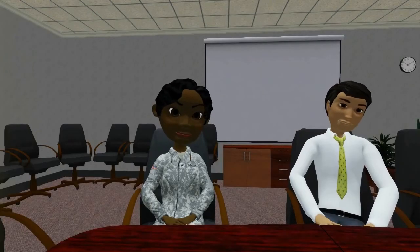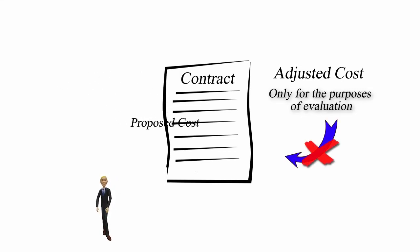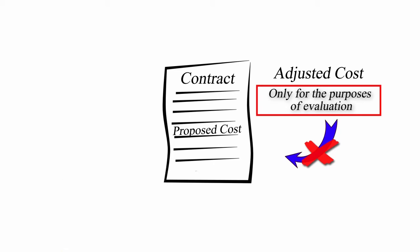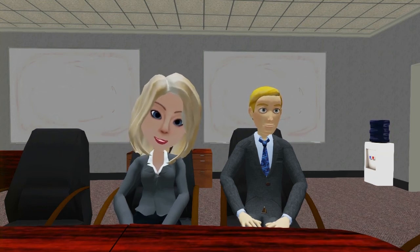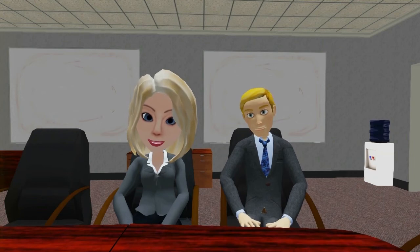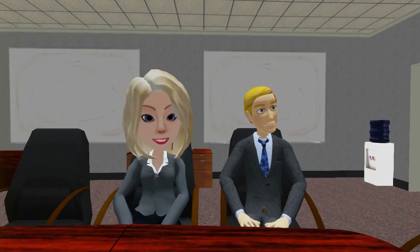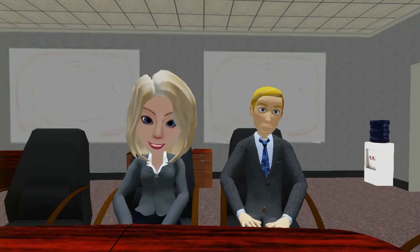Now let's suppose that the offeror whose proposal has been adjusted up is chosen as the winner. Do we award the contract at that higher value? No, the contract will be awarded at the lower estimated cost figures contained in the offeror's final proposal. Remember, the adjustments are for the purpose of evaluation only. However, that does not mean you have just saved some program funds and can spend them elsewhere. What it does mean is that the program office and contracting officer are on notice at the time of award that contract performance is likely to result in a cost overrun. So be prepared — make sure you set aside and fence the extra money that will be needed. Maybe you even want to make this a topic to discuss at the post-award conference.